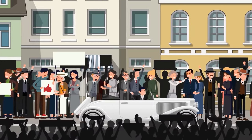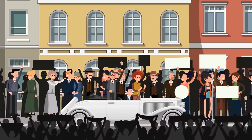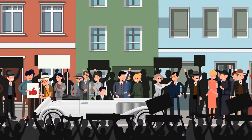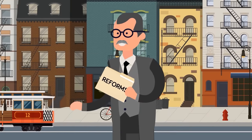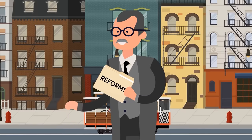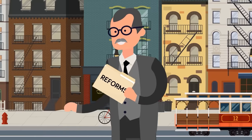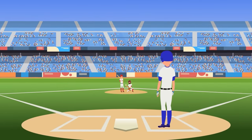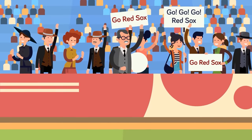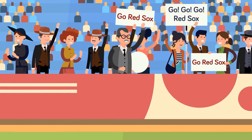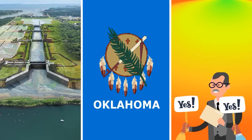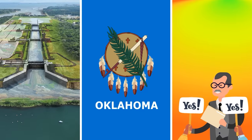Roosevelt was pro-business, but also pro-regulation, and he wanted to make sure the megacorps that were starting to form didn't grow out of control. He passed business reforms that were popular with his progressive base, but it didn't stop growth. This was the era when famous corporations like U.S. Steel, the Ford Motor Company, and Harley-Davidson were formed. The first World Series was played, and Roosevelt's international policy continued with McKinley's legacy of expansion. The U.S. acquired the Panama Canal Zone, Oklahoma became a state, and Roosevelt was seen as a wildly successful president. The former outcast was overwhelmingly re-elected, but there would come to be some rough waters ahead.